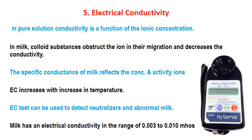The next property is electrical conductivity. In pure solution, conductivity is a function of ionic concentration. In milk, colloidal substances obstruct ion migration and affect conductivity. The specific conductance of milk reflects the concentration and activity of ions. Conductivity is thus indirectly related to the concentration of ions present and their activity. Electrical conductivity increases with increase in temperature, likely because higher temperature increases ionization and concentration of ions.